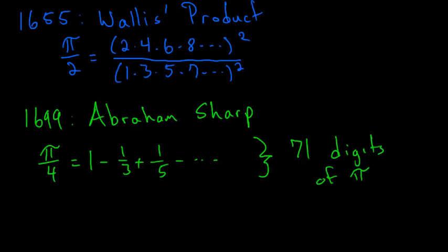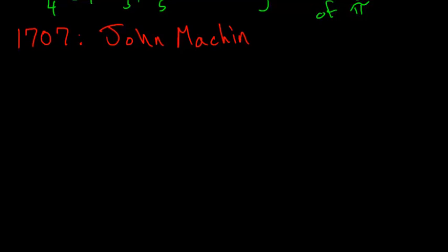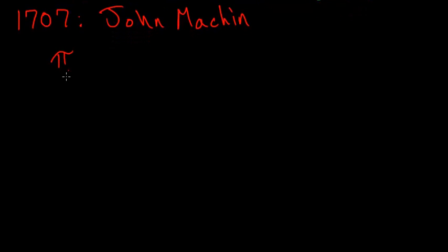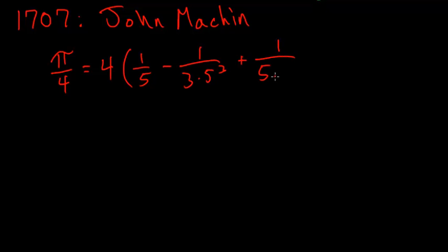In the year 1707, the mathematician John Machin found another formula for pi, that pi divided by 4 is equal to 4 multiplied by the infinite sum of 1 fifth minus 1 over 3 times 5 cubed plus 1 divided by 5 times 5 to the fifth minus 1 divided by 7 times 5 to the seventh and so on. This goes on forever.